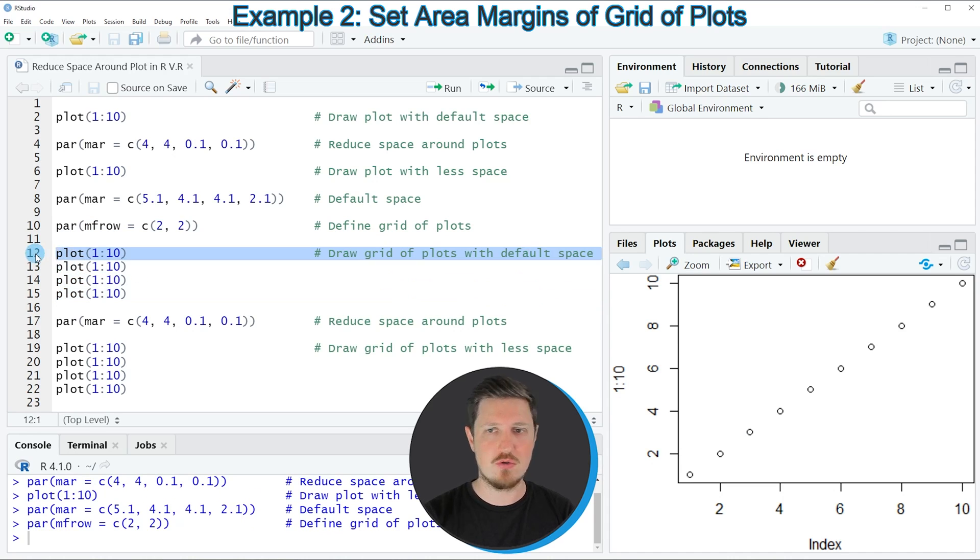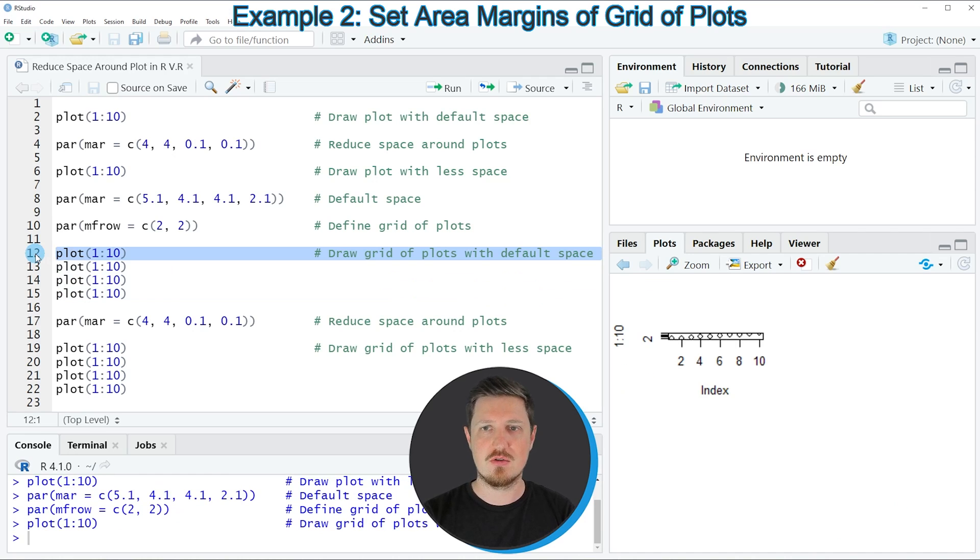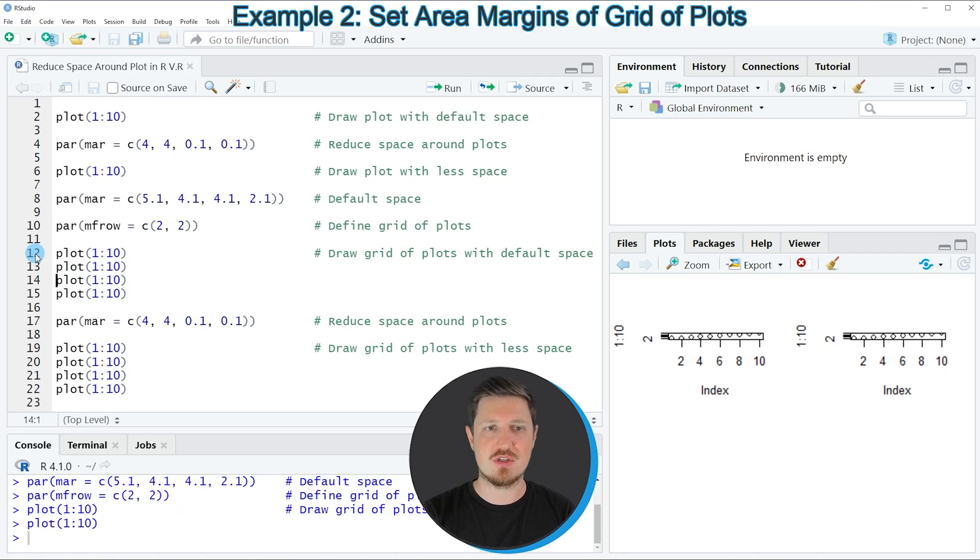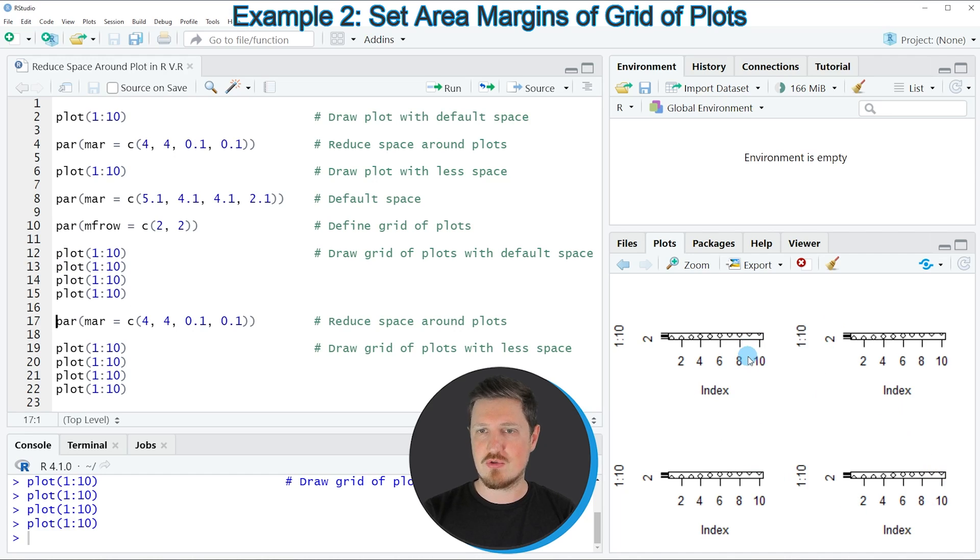If you run line 12, the first plot at the top left is created. With line 13, another plot is created, and with line 14 and 15 as well. So as you can see, we have created a grid of four plots. However, you can also see that the space around these plots is relatively large. So the plots themselves are not really good to see.